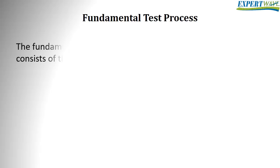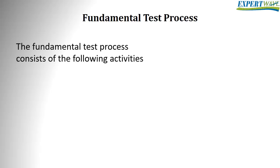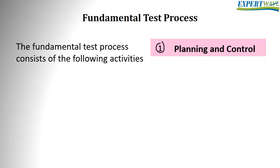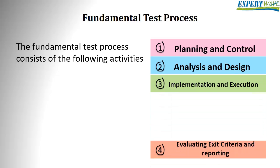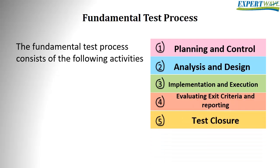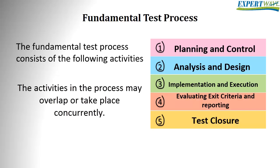In the ISTQB foundation-level syllabus, we learned that the fundamental test process includes the following activities: planning and control, analysis and design, implementation and execution, evaluating exit criteria and reporting, and test closure activities. The foundation-level syllabus also states that although logically sequential, the activities in the process may overlap or take place concurrently — meaning some testers might be doing analysis and design while others are doing implementation and execution, while test managers are doing planning and controlling. So we could tailor these main activities within the context of the system and the project as needed.